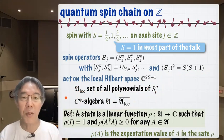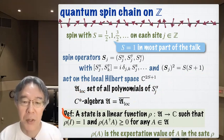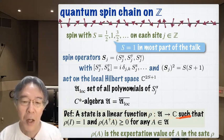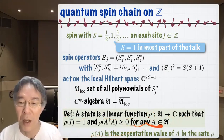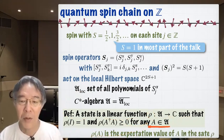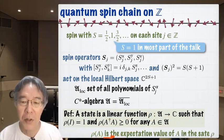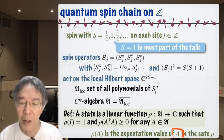The C*-algebra R of this quantum spin system is the completion with respect to the operator norm of R-loc. In this treatment of infinite systems, a state of the quantum spin system is a linear function rho from the space of operators to the complex numbers, satisfying a normalization condition and a positivity condition where A is any operator.